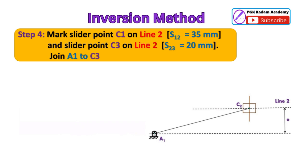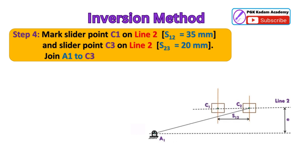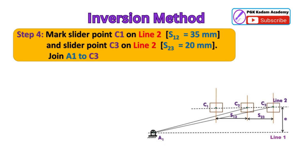Step 4: Mark slider point C1 which is at distance of S1-2 from C2. Means its linear displacement S1-2 from C2 is equal to 35 mm. Similarly, mark slider point C3 which is at distance of S2-3 from C2. Means linear displacement S2-3 from C2 is equal to 20 mm.